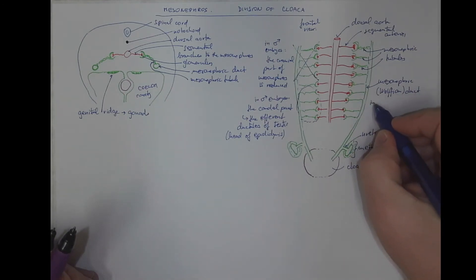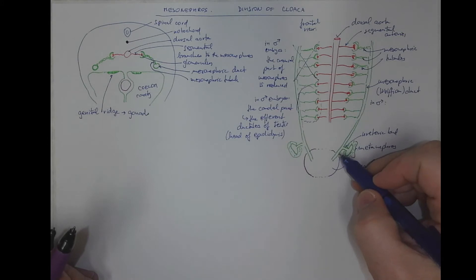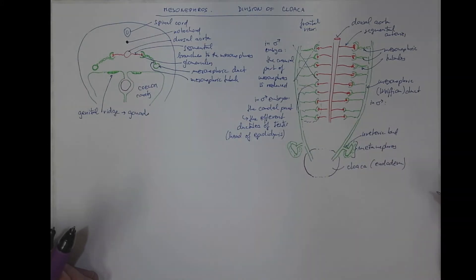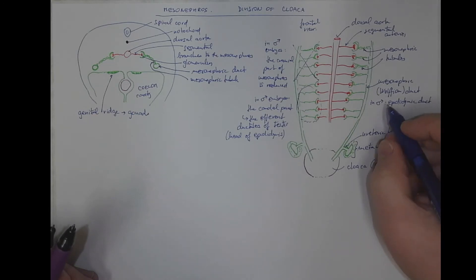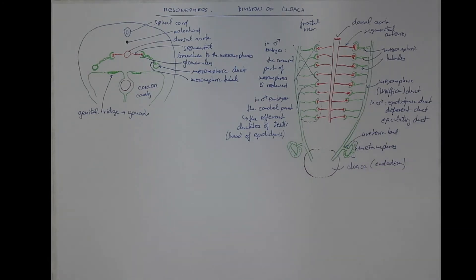What becomes out of the Wolffian duct? In male embryos, it becomes the excretory passages of the genital system. So, the epididymis duct, the deferent duct, and the ejaculatory duct.